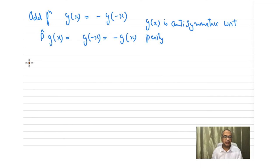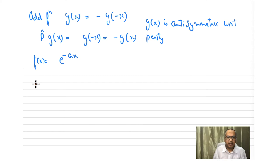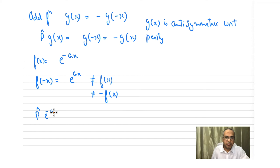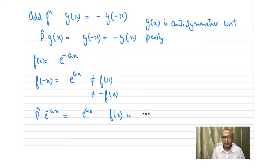In certain conditions a function can be neither even nor odd — it is not necessary that it must be one or the other. For example, f(x) = e^(−ax): applying f(−x) gives e^(ax), which is not equal to f(x) and not equal to −f(x). So applying parity on e^(−ax) gives e^(ax), which is neither f(x) nor −f(x). We say this function is asymmetric with respect to parity.